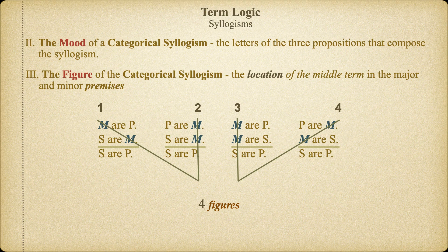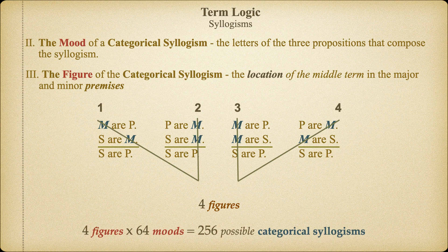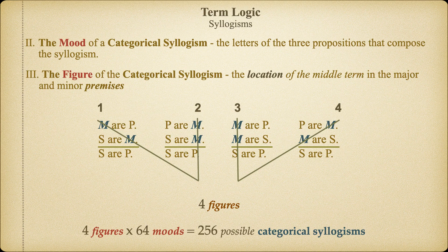Of course, only a small fragment of these argument forms — that is, the moods and figures that we can put together — are going to turn out to be valid arguments, and we're going to talk more about that in the next video. For now, it's just important for us to learn the concept of mood, what kinds of propositions an argument is composed of, and the figure, the orientation of the middle term in a particular syllogism. Given that we've got four figures for categorical syllogisms and 64 possible moods, we're going to end up with 256 possible categorical syllogisms that we could build. Only a very small fragment of these syllogisms are going to turn out to be valid, and that's going to be the concentration of our next video. But this shows us all of the possible ways in which one could form a categorical syllogism.